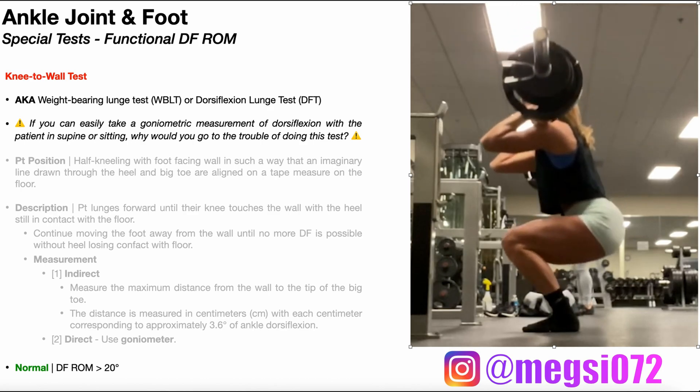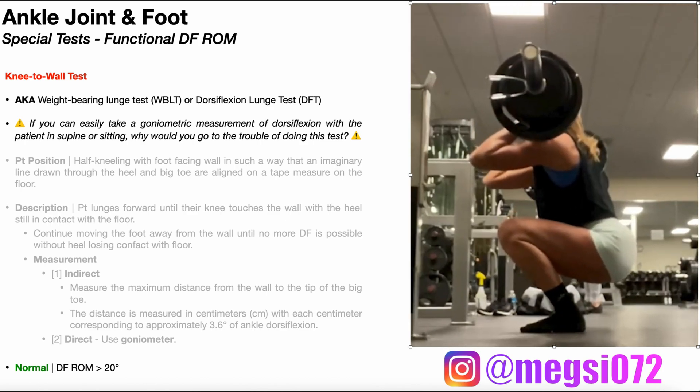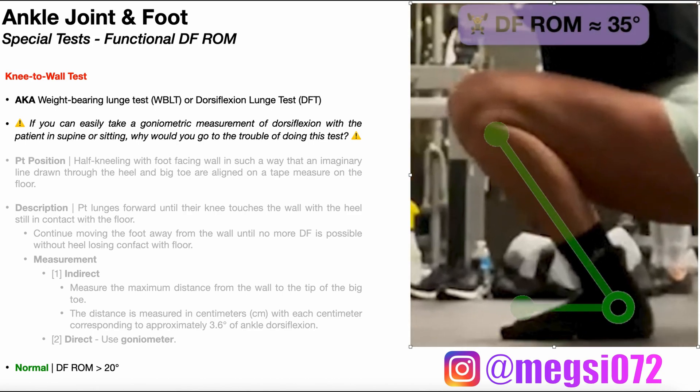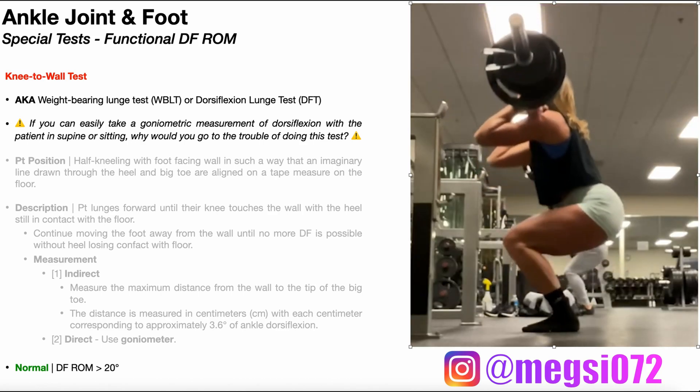But what if your patient is an athlete? Take for example, this squat shown here. At the depth of this squat, she's got about 35 degrees of closed chain dorsiflexion range of motion, well in excess of the textbook 20 degrees. So she should have no problem with gait or clearing stairs.